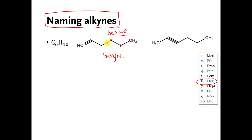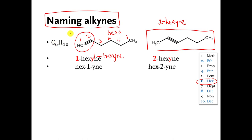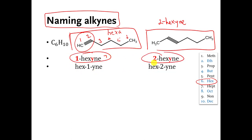Same thing — we number the carbons from whatever end makes us hit the triple bond first: one, two, three, four, five, six. We tell people what carbon the triple bond starts at — it starts at number one — so that molecule would be called one-hexyne. The one over here would be two-hexyne. There is an alternate naming rule where this is called hex-1-yne and hex-2-yne, but you don't need to know that one.